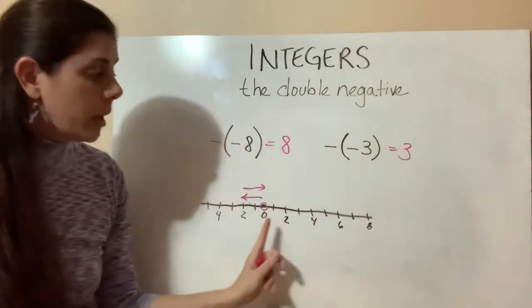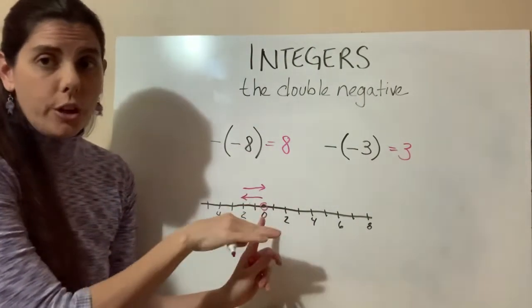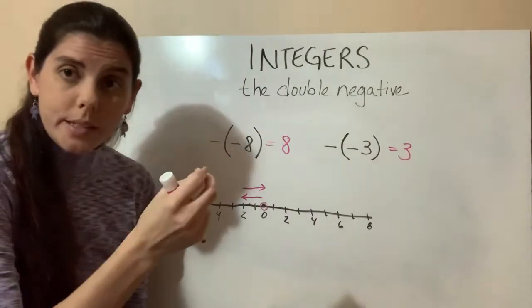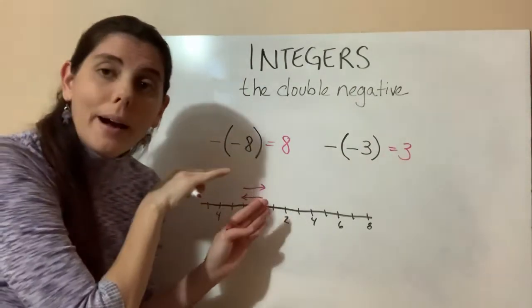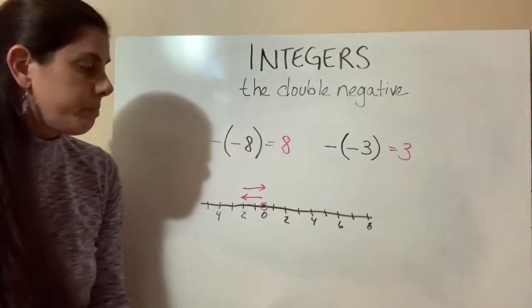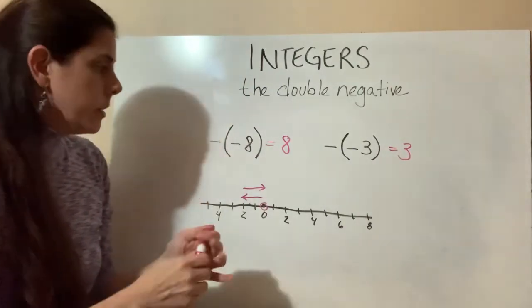So our starting point is zero, but these two signs are telling us what direction to go. And since it's a double negative, we're changing direction twice, which just puts us back into going in that natural direction toward the right again. So that's one way to look at it. Another way to look at it is...